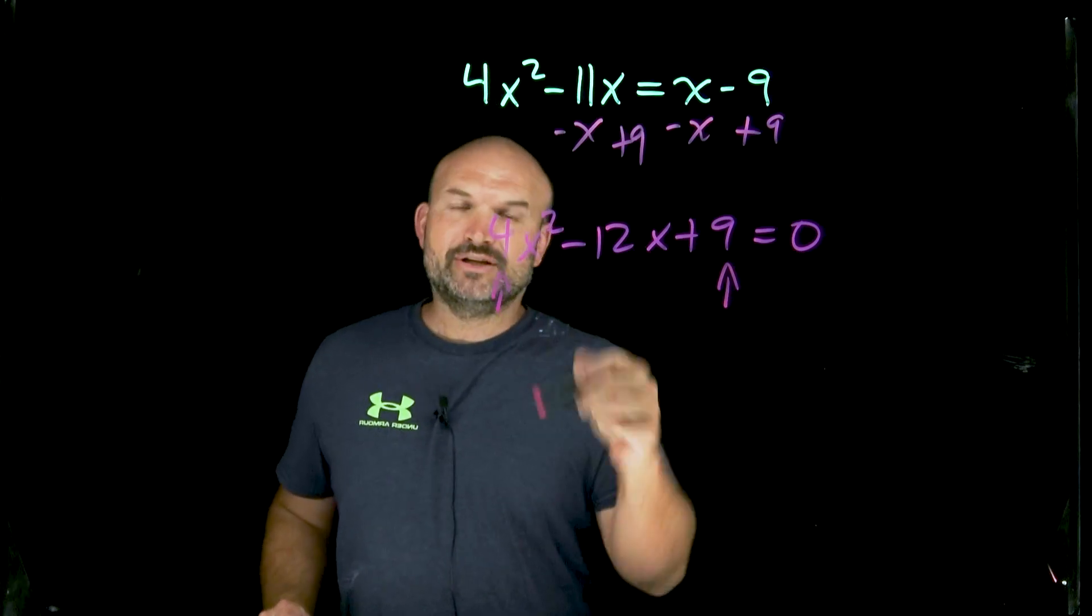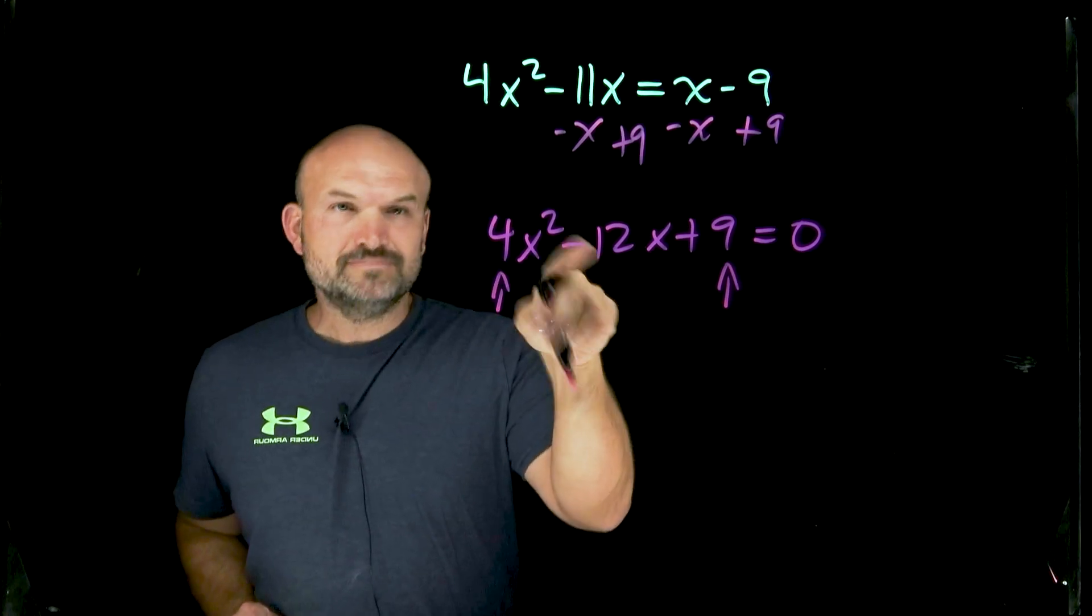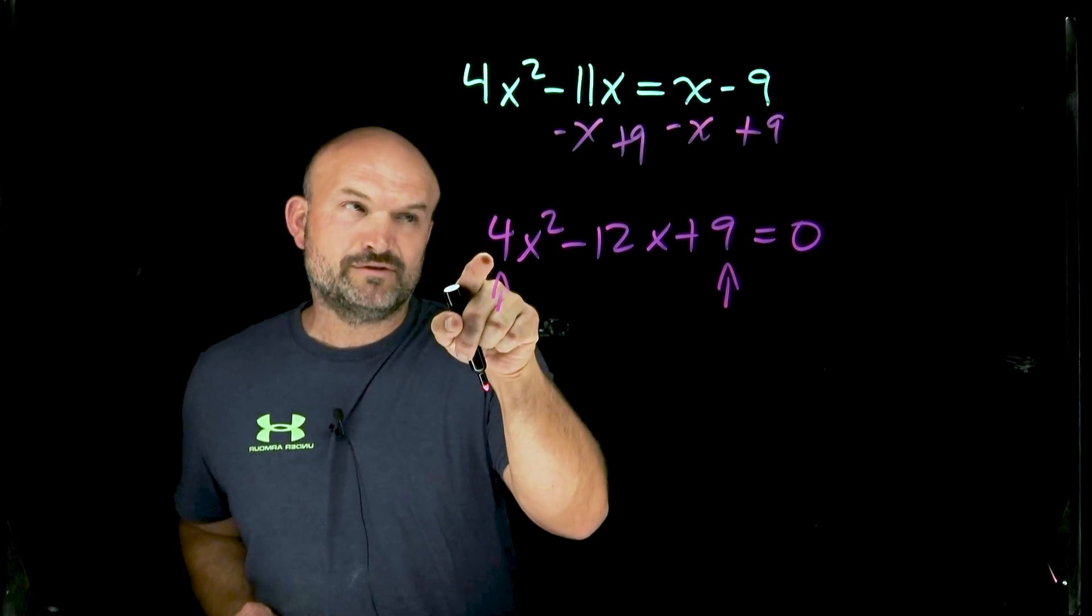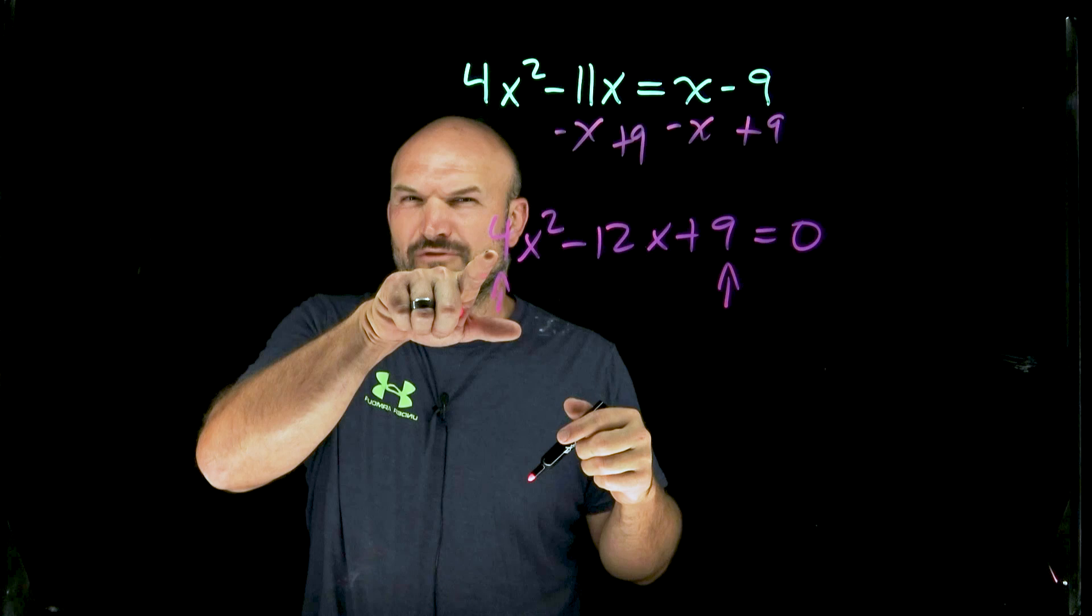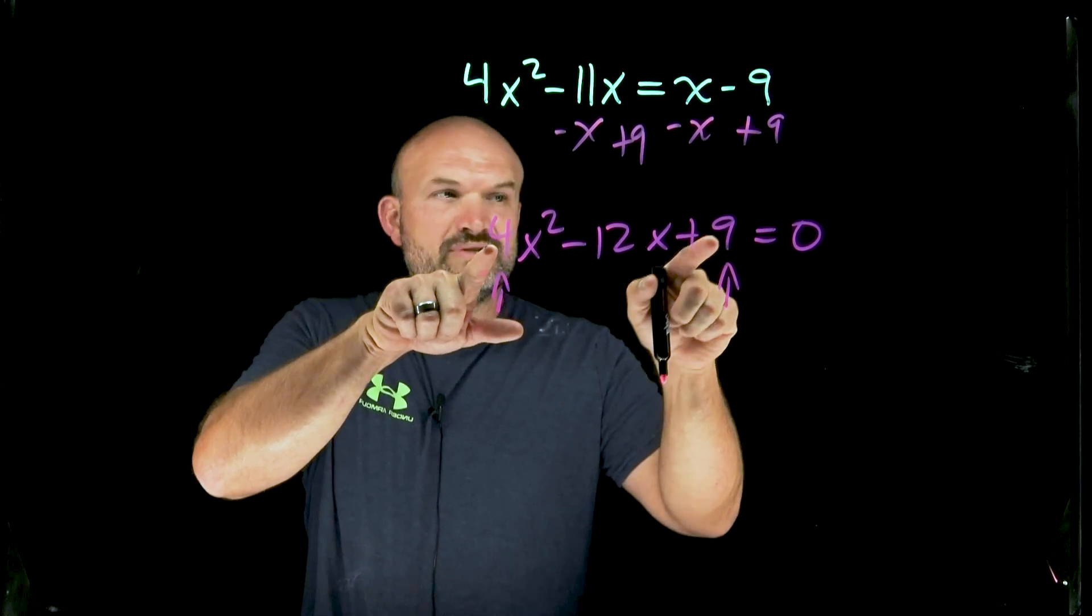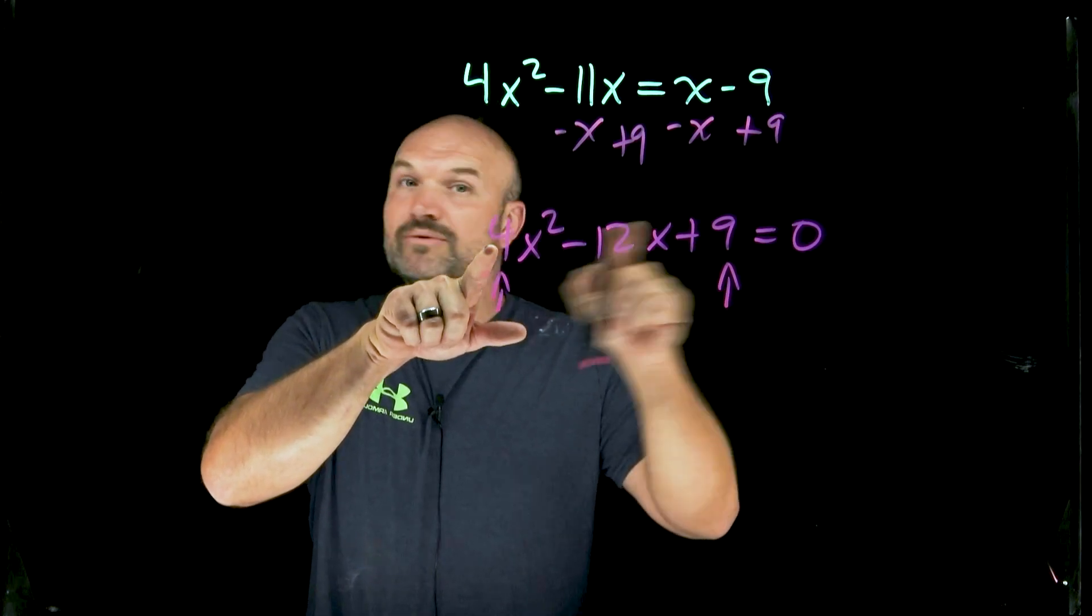And then what you can simply do is you can always test it in your head to see if your middle term is going to be two times the square root of your first term times the square root of your last term. And let's go ahead and check it. So the square root of four is two, square root of nine is three. Two times three is going to be six times two is 12.